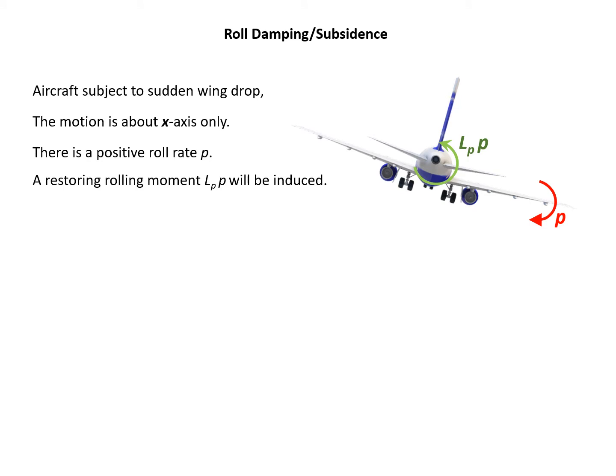Because the right wing is going downward and the left wing is going upward, there is an unbalanced force acting with increased lift on the right wing and reduced lift on the left wing. So a restoring rolling moment will be produced, denoted as Lp times P, because the rolling moment is due to the change in rolling rate.